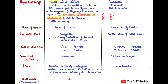In adults, the thyroid cartilage is much more angulated. The Adam's Apple exists because the two laminae of the thyroid cartilage are angled at 90 degrees to each other in males, whereas in females this angle is much more obtuse at about 120 degrees.